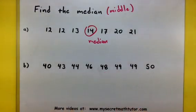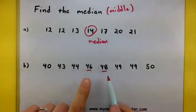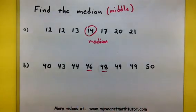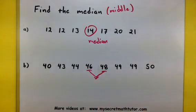Now this time, there is no number in the middle. Well, what I can do is instead take the average of these two numbers, the forty-six and the forty-eight. So basically, add them together and then divide by two.